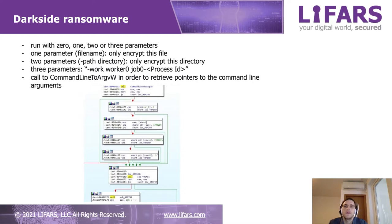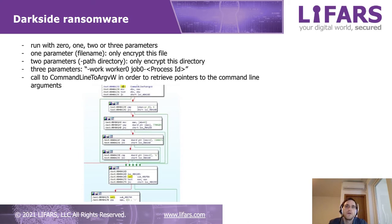DarkSide can run with zero, one, two, or three parameters. In the case of one parameter, which should be a file name, the ransomware will only encrypt that file. In the case of two parameters, which should be -path and a directory, the malware will only encrypt that directory. In the case of three parameters, it should be -worker, worker zero, job zero, and minus process ID.